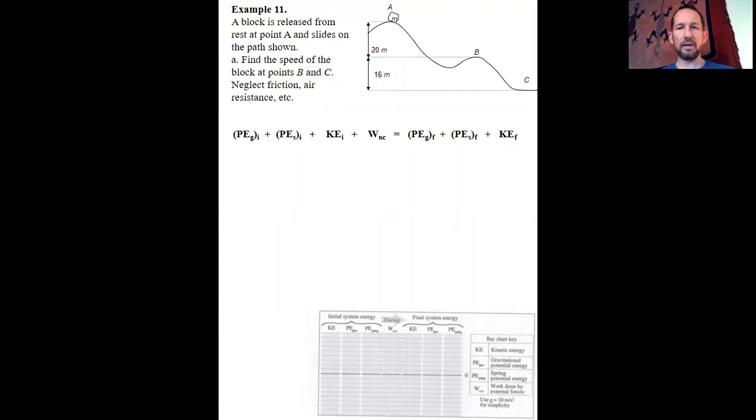So here we go. We're going to do this problem for some rock or block that gets released and it slides down to point B and onto point C. We're supposed to find out how fast it's going at B and how fast it's going at C.